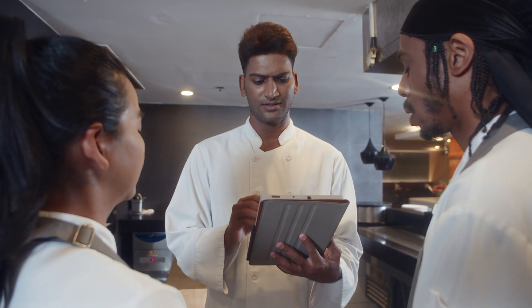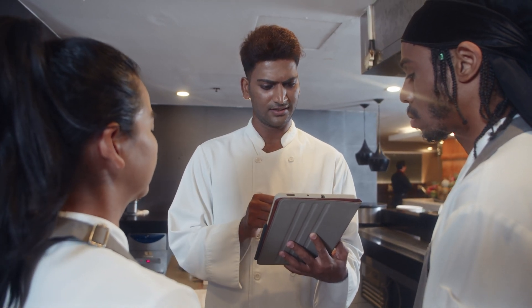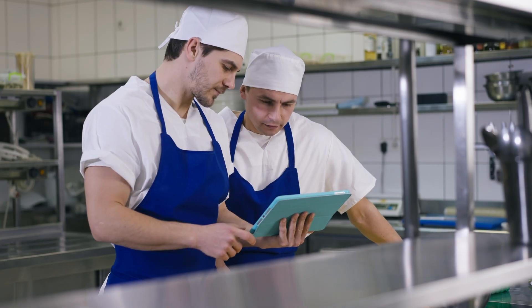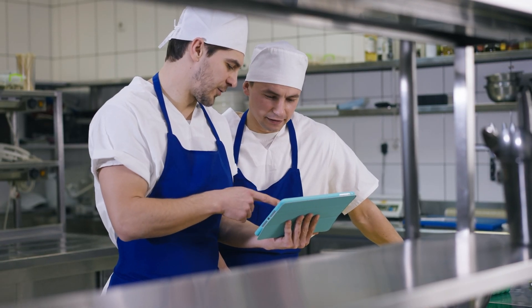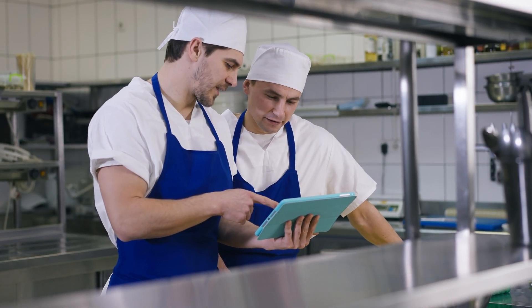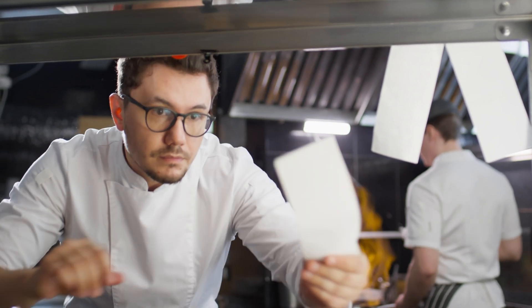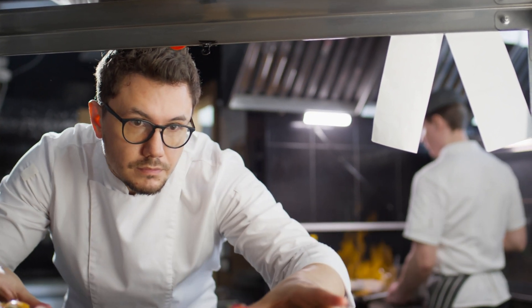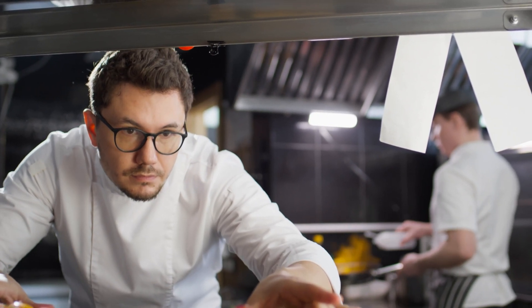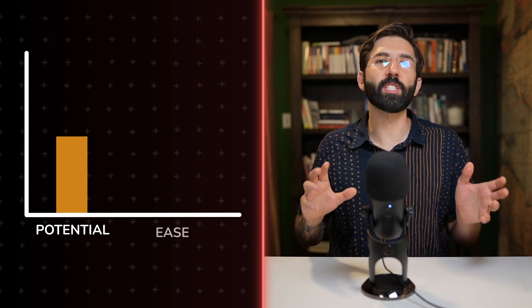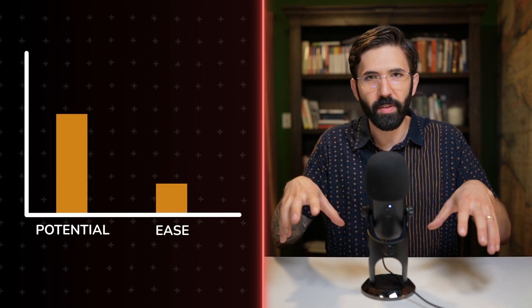Instead of having to tell his staff each ingredient in each meal and how to cook each ingredient, the chef just says the name of the dish that the customer ordered and his staff knows what to do. Like the playbook, the recipe book imposes order on the chef's staff.